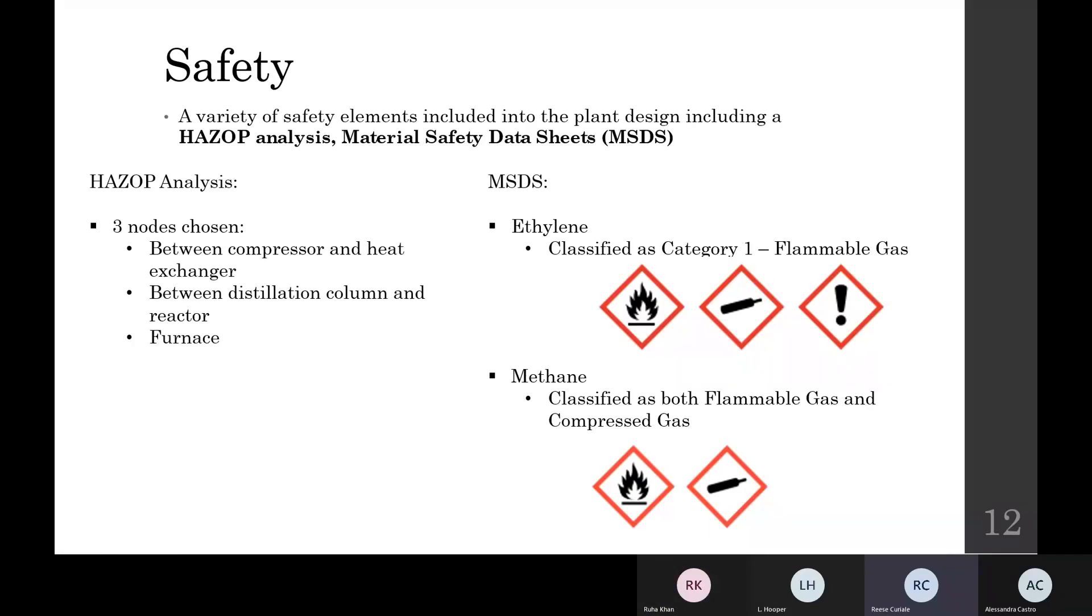Safety is an extremely important factor to consider when designing any new plant or process. Safety was maintained primarily through using process control, as mentioned previously, as well as through a HAZOP analysis and material safety data on the chemicals produced from the design process.